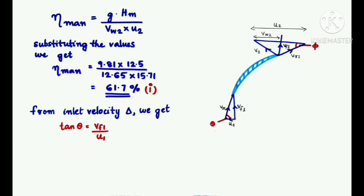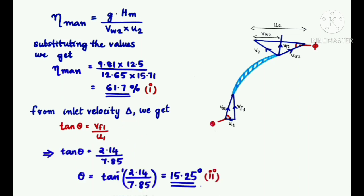Now, let us see the inlet velocity triangle and from that, we can see that tan θ = Vf1/U1, that is tan θ = 2.14 m/s / 7.85 m/s. From that, we can get the value of θ = 15.25°.